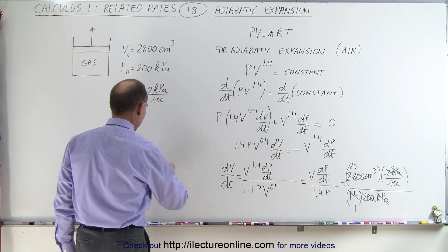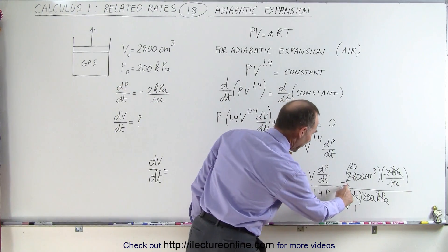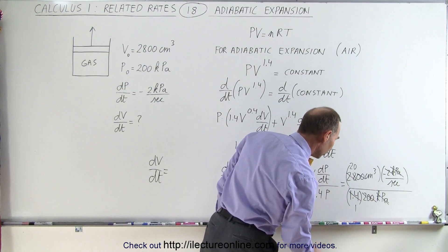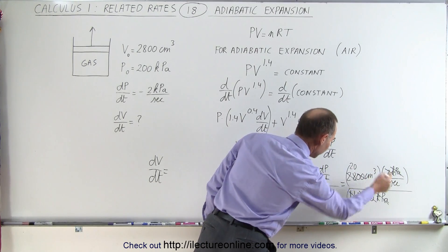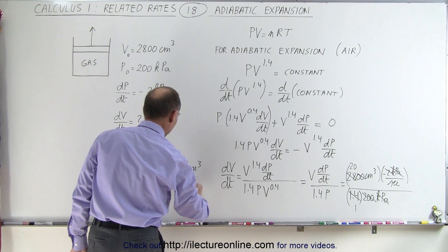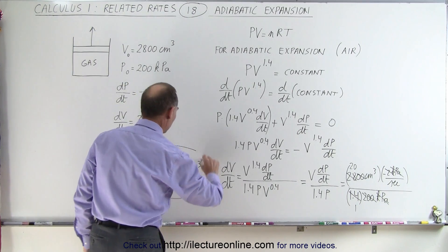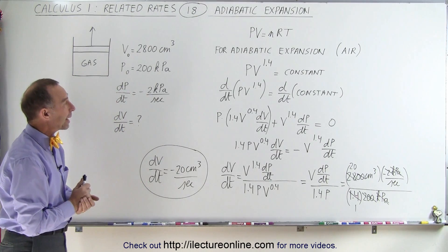We're left with dV/dt equals minus 20 cubic centimeters per second. So minus 20 cubic centimeters per second, and that would be the rate of change to the volume with respect to time in this particular adiabatic expansion.